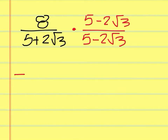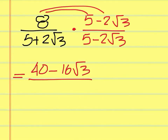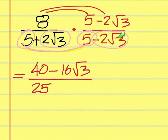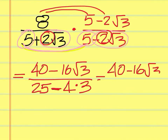When we multiply this out, on the top that's an easy one — that's 40, and then minus 16 square root of 3. On the bottom, when we multiply these two expressions together, 5 times 5 is 25. The middle terms cancel out — that's why we do it this way. The only other thing to worry about is multiplying 2 square root of 3 times negative 2 square root of 3, which gives a minus 4 times 3, since 2 times 2 is 4 and square root of 3 times square root of 3 is 3. So simplify the bottom: 25 minus 12, which gives you 13 on the bottom.